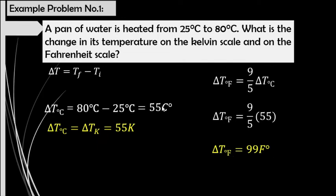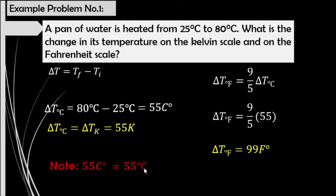As you can observe, we use the units of Celsius degrees and Fahrenheit degrees for the change in temperature. 55 Celsius degrees is not the same as 55 degrees Celsius, and 99 Fahrenheit degrees is not equal to 99 degrees Fahrenheit. For delta T, the units will be Celsius degrees, Fahrenheit degrees, or Kelvin.